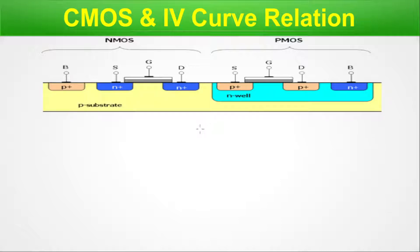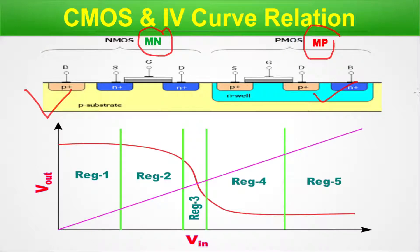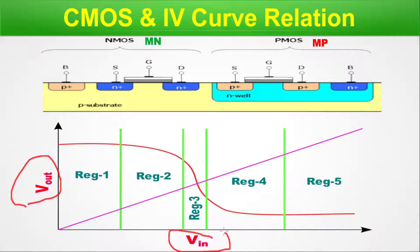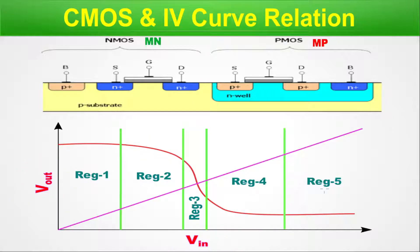Now, CMOS and its IV curve relation. Here we will correlate the CMOS switching curve — which we saw a couple of slides back — with the MOSFET regions explained in the previous slide. This is an entirely pictorial slide. The NMOS is termed MN and the PMOS is termed MP in the graph. The x-axis is V in and the y-axis is V out. The switching curve has been stretched so you can understand each different region clearly — in reality this happens in a very short time period.